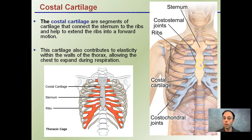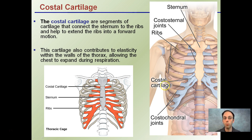In the classroom, we also have a skeleton, and you're welcome to take a look at it and see how the different ribs look and how they're oriented. Can you identify what's a false rib, what's a floating rib, and what's a true or fixed rib?